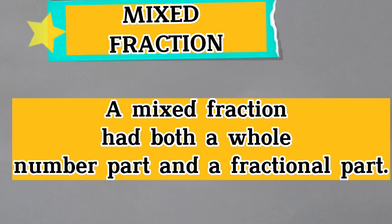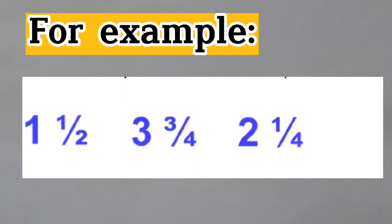The last type of fraction is a mixed fraction. A mixed fraction has both a whole number part and a fractional part. For example: one and one half, three and three fourths, two and one fourth.